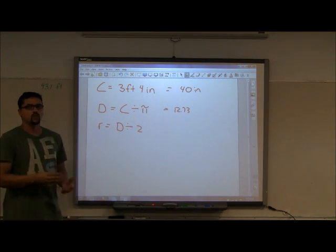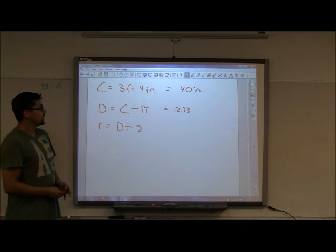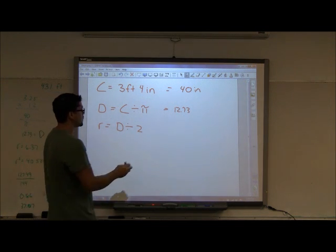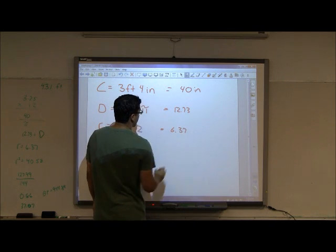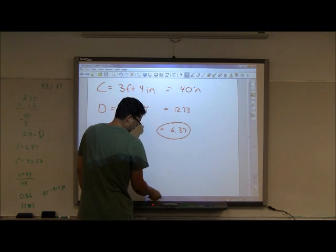After we find the diameter, we have to find the radius. And to find the radius, you simply divide your diameter by 2. So when you divide 12.73 by 2, you come up with 6.37. That's our radius, so we want to remember that.